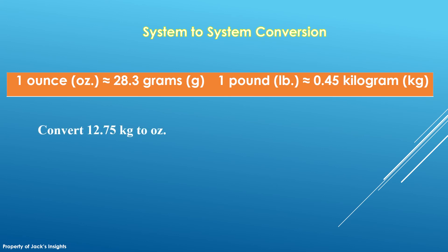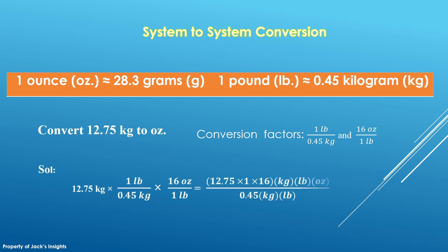Let's have 12.75 kg to be converted to oz. First, determine the conversion factors to be used in order to get the desired unit. The conversion factors for this problem are 1 lb over 0.45 kg and 16 oz over 1 lb. Arrange your solution using the factor label method. 12.75 kg times 1 lb over 0.45 kg times 16 oz over 1 lb equals. This time the units kg and lb will be cancelled out. And the answer is 453.33 oz. So, that is how to convert units from one system to the other.